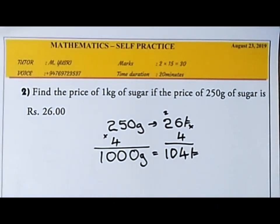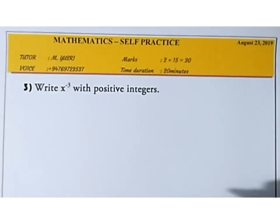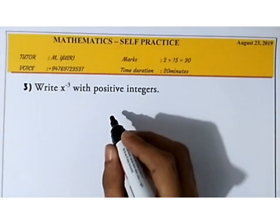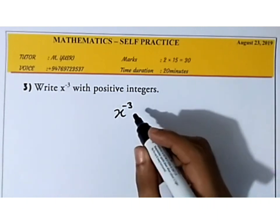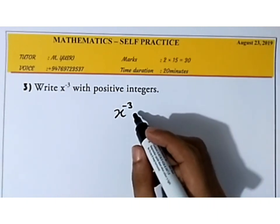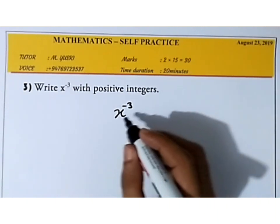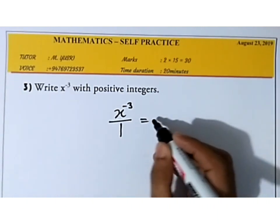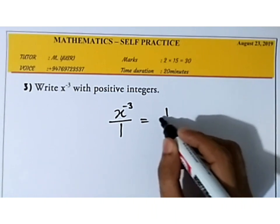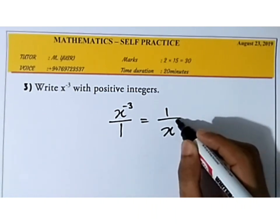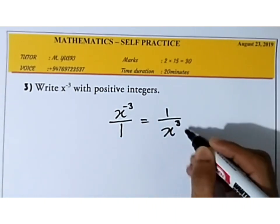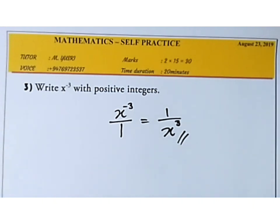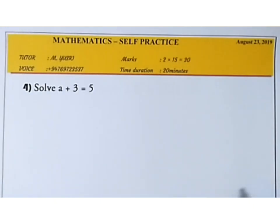For x to the power of minus 3, we need to convert this to a positive exponent. We take the reciprocal: 1 over x, and the negative exponent becomes positive — x to the power 3. So the answer is 1/x³.